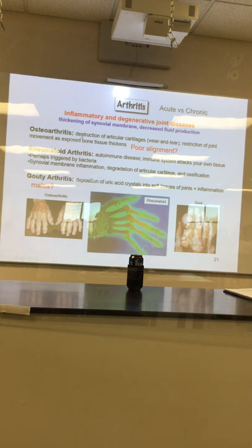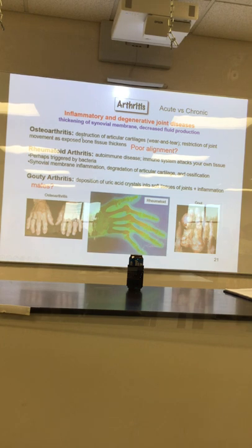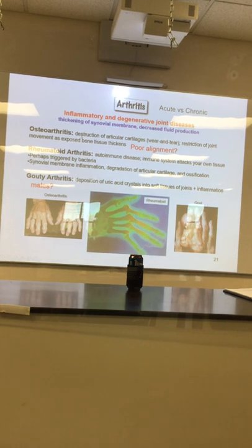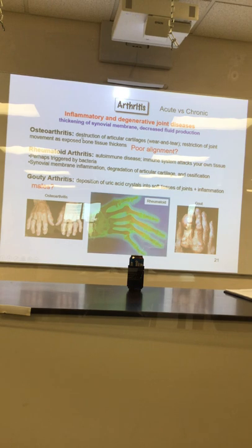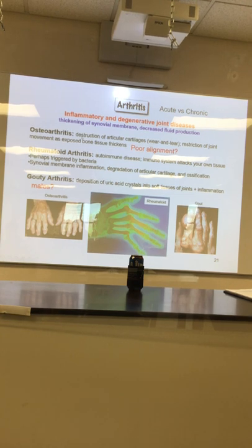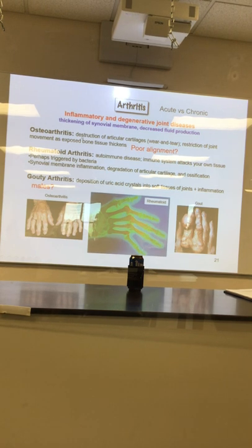Moving on — gout. Gout is really more of a male thing, something about how males accrue certain nucleic acids. When you eat foods that are really rich in purines — preserved meats, rich cheeses, red meat, deli sandwiches — that causes a buildup of uric acid in the body. When the kidneys aren't keeping up with it well enough, that uric acid begins to crystallize and form crystals of uric acid in joint cavities.